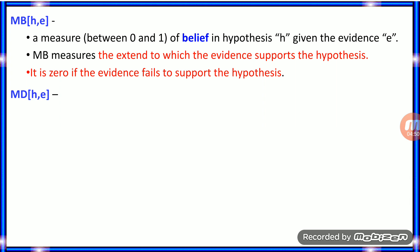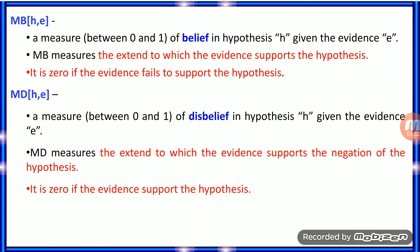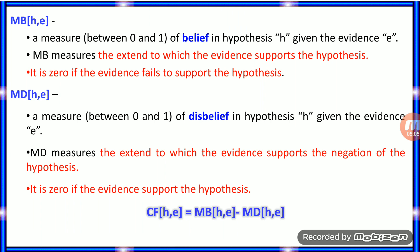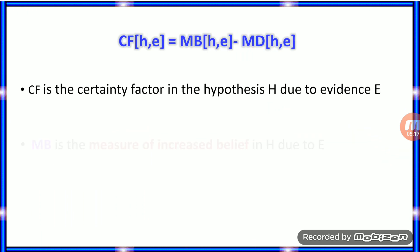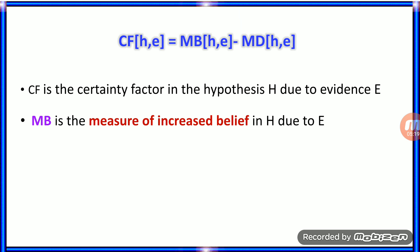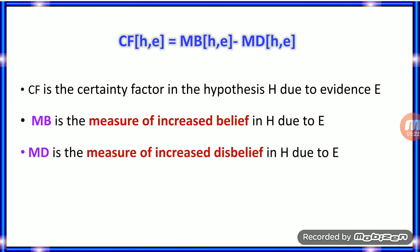Measure of belief is 0 if the evidence fails to support the hypothesis. Measure of disbelief also lies between 0 and 1; it measures the extent to which the evidence supports the negation of the hypothesis and is 0 if the evidence supports the hypothesis. Using these two components, the certainty factor is calculated as: CF = MB − MD, given hypothesis H and evidence E. MB is the measure of increased belief and MD is the measure of increased disbelief in H due to E.